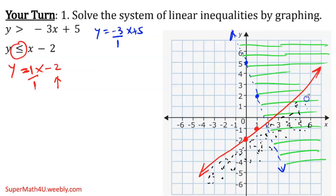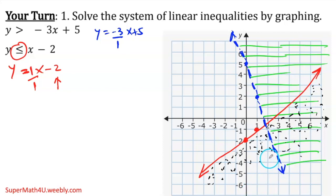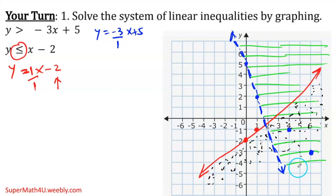Where are the two shades intersecting? On the top, on the right, or the bottom? Here on the right — this is the solution of the system. Where the two shades intersect is the solution of the system. Any point in the intersection is a solution. For example, 4 negative 1 — solution. 6 negative 3 — solution. 6 comma 2 — solution. 3 comma 4 — not a solution. 1 negative 4 — not a solution. Why? Because it's not part of the intersection.